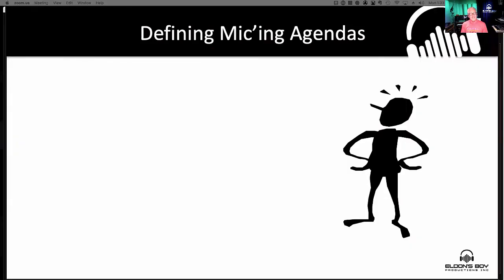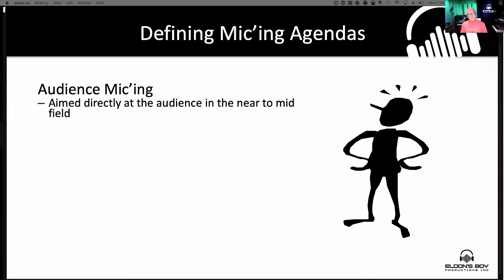So we've got to define the micing agendas. That is really one of the most important things you can do right out of the gate — figure out what it is you're actually trying to do with these microphones. For audience microphones, they're usually going to be aimed directly at the audience in the near to mid field. For rock and roll, we usually see them up around the stage pointing out at the audience, things like that.